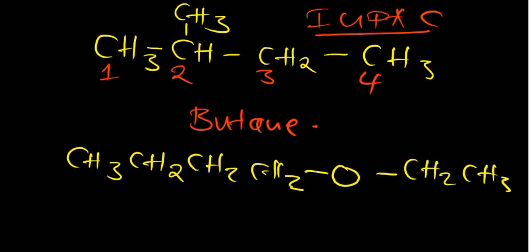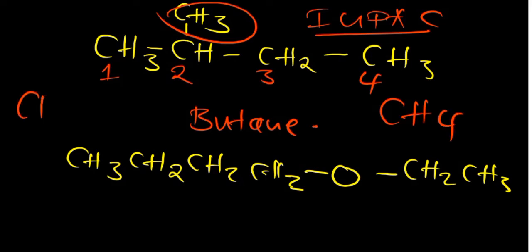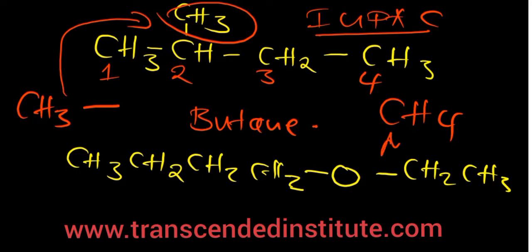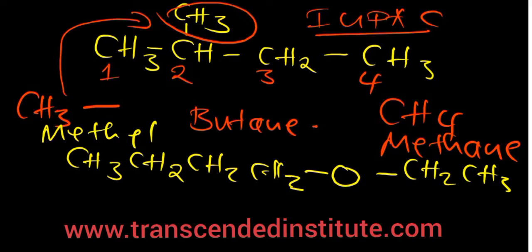We also have what we call substituents - basically the other groups that attach to the main chain or the longest chain. We can clearly identify CH3 as a substituent - something attached to the parent longest chain of carbon atoms. We also have what we call alkyls - an alkyl is simply an alkane that has lost a hydrogen atom. For example, if methane CH4 loses a hydrogen atom, it becomes CH3 with a bond remaining. CH3 is what we see as a substituent. The name changes from methane to methyl - we add -yl to our prefixes.